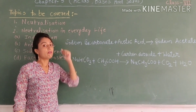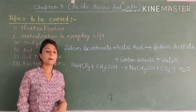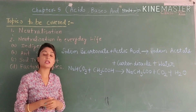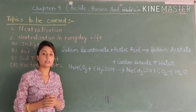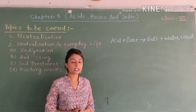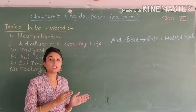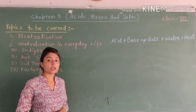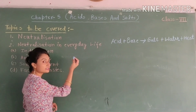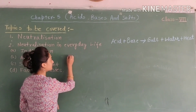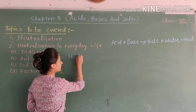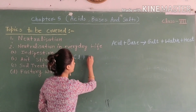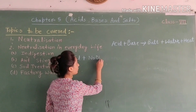You can react any acid with any base this way, and these are called neutralization reactions. Let's look at another example. We have hydrochloric acid (HCl) and the base is sodium hydroxide (NaOH). When this acid and base react, we get a new salt.